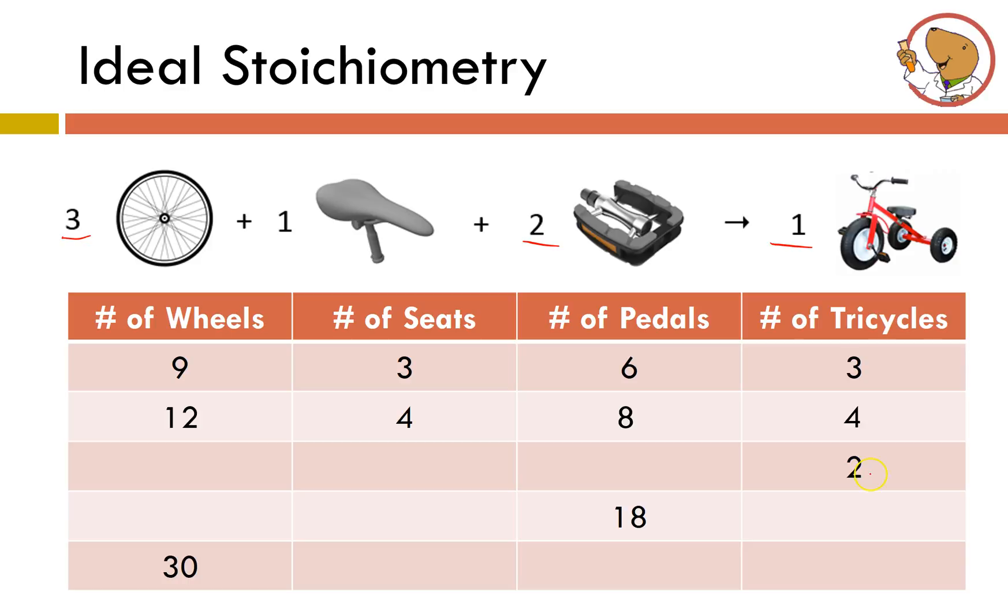Now we can start at a different place. Let's say you only want to make two tricycles. Well then we have to double all the coefficients. I need six wheels, two bicycle seats, and four pedals. If you have 18 pedals that means you're going to need 27 wheels, nine bike seats, so you can make nine tricycles. And finally if you start off with 30 wheels you would need 10 seats, 20 pedals, and that would enable you to make 10 tricycles.